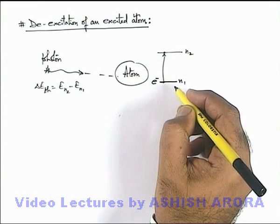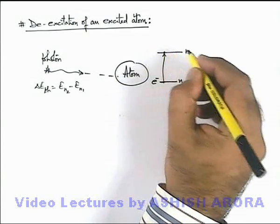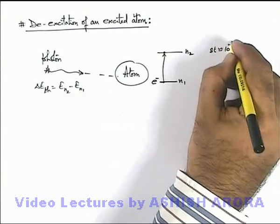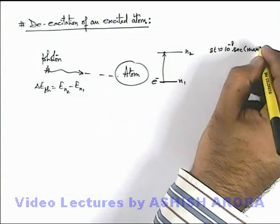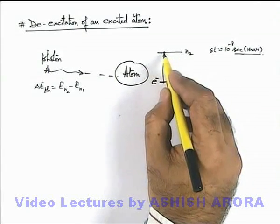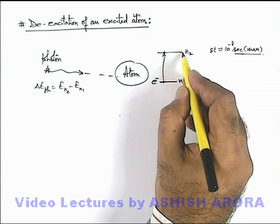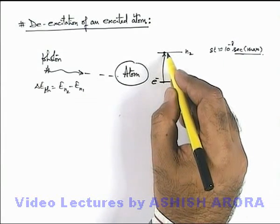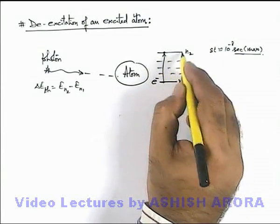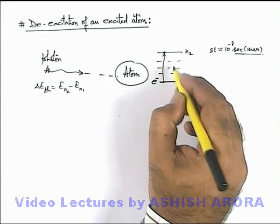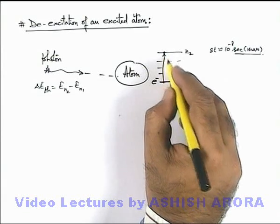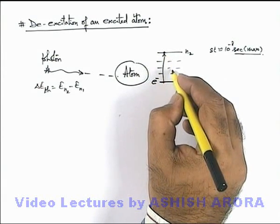In this situation we can say after some time, generally the time is of the order of 10 to the power minus 8 seconds, this is maximum, after which when electron is trying to be stable in the higher energy level, after this time it will realize, or we can state, as lower energy levels in between n2 and n1 as well as n1 are available as vacant states, then certainly electron will make a reverse transition from higher level to the lower level.